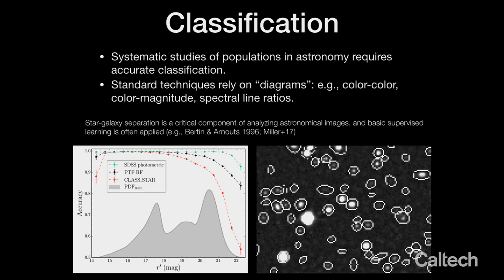Astronomy is moving into a regime where machine learning techniques are being applied more and more to the classification problem. For example, a simple question: when you take an astronomical image, which object is a star and which one is a galaxy? It's a really simple question, and yet it's something that has occupied us for quite a while. Now machine learning techniques are standard in solving this — an algorithm has identified different sources and is able to say which is a star and which is a galaxy, allowing you to associate a flash of light in the sky with something behind it.